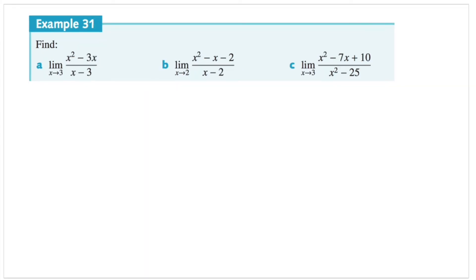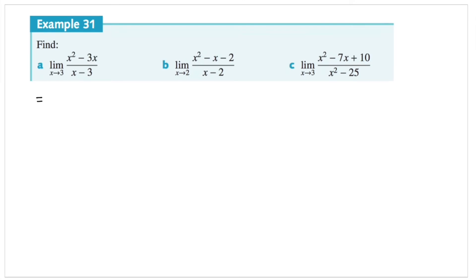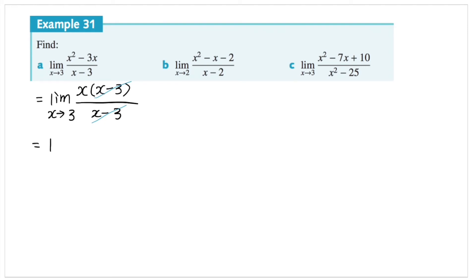There are three more questions, and these are trickier because we need to factorize and simplify before finding the limit. For the first one, it's a quotient with limit as x approaches 3. On top of the fraction, we can take x out as a common factor, leaving x minus 3 in the brackets, all over x minus 3. We divide both top and bottom by x minus 3, and we're left with x only. So the value of x as x approaches 3 is simply 3. There's a bit of factorization involved, but overall it's a fairly easy question.